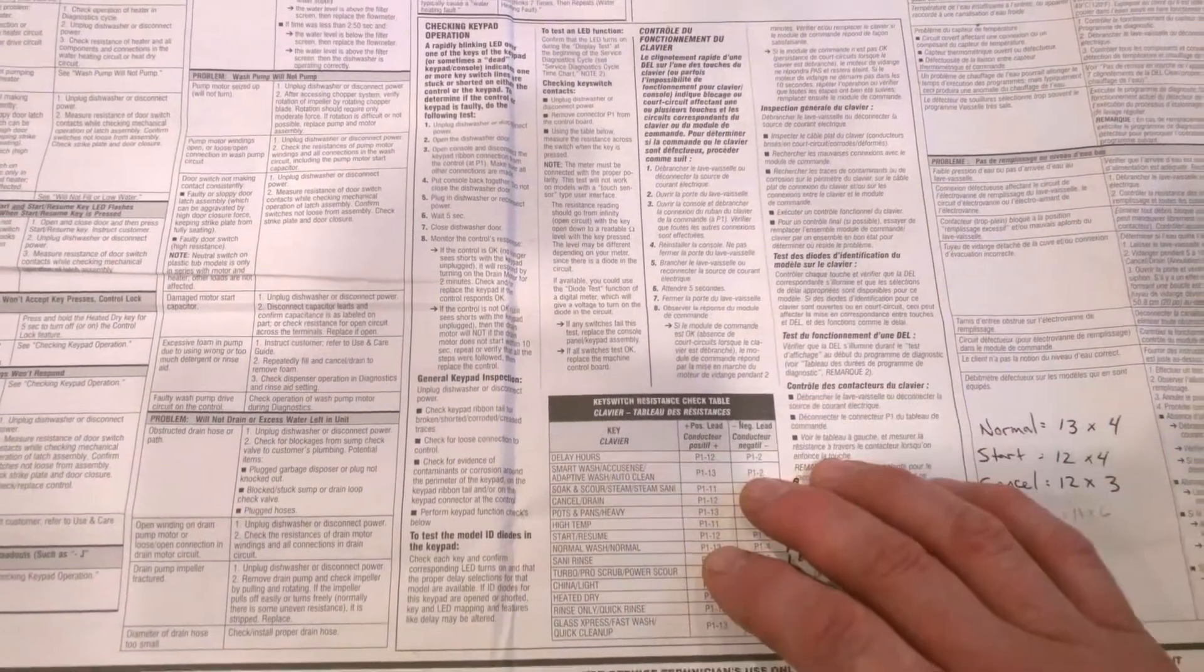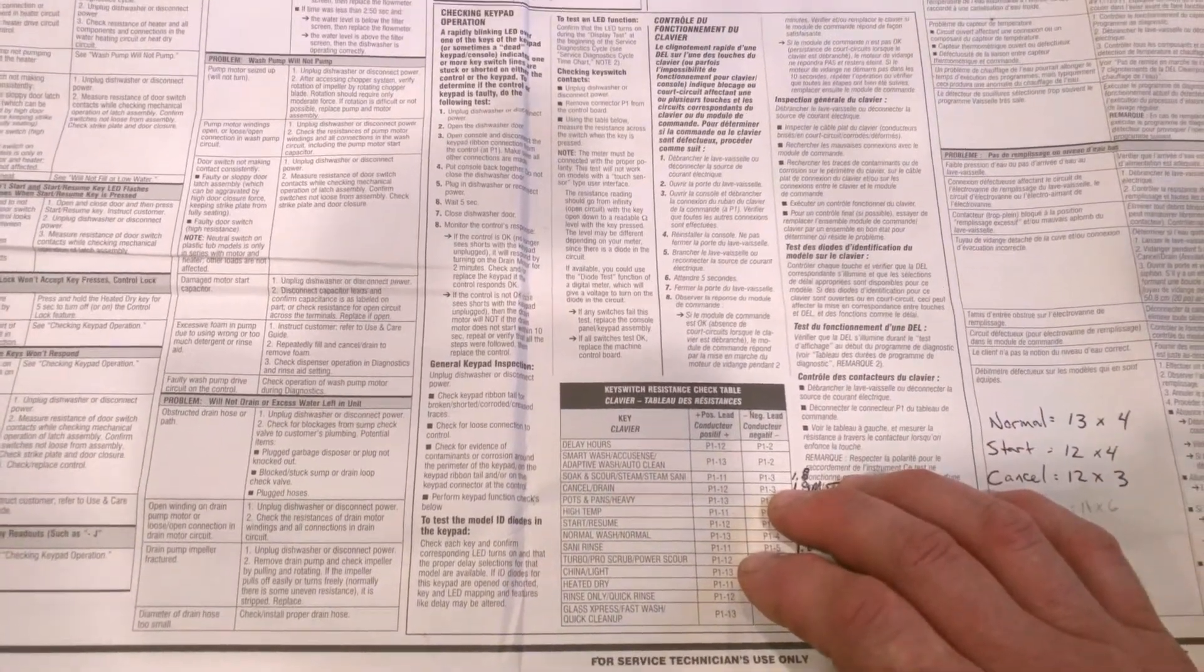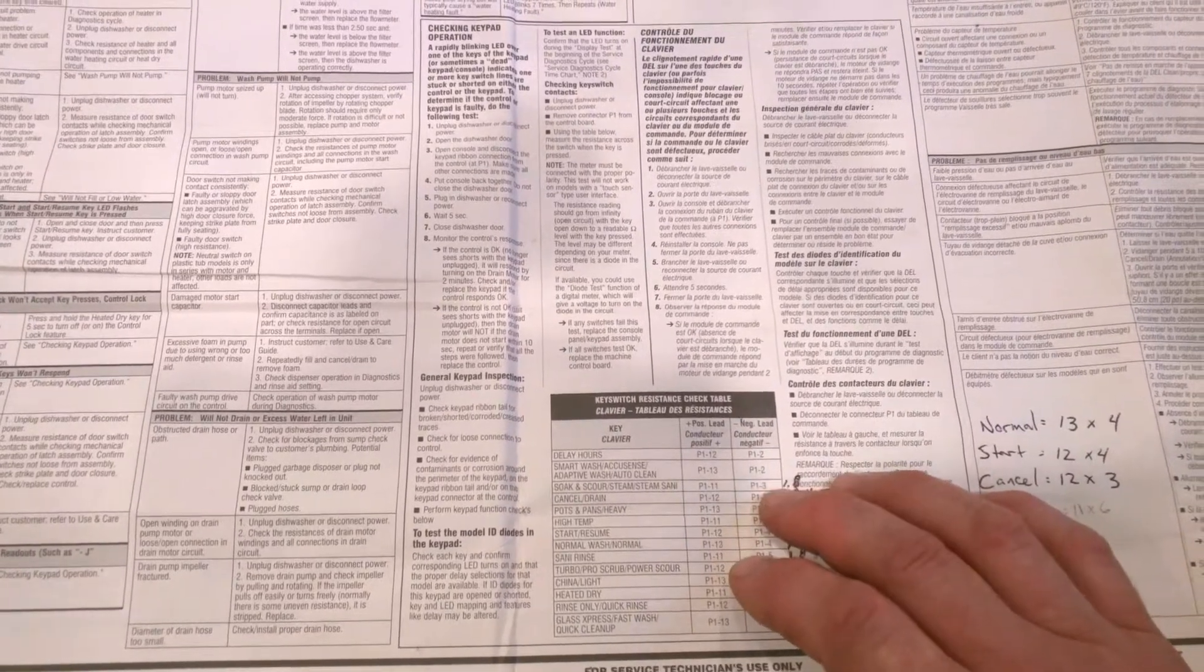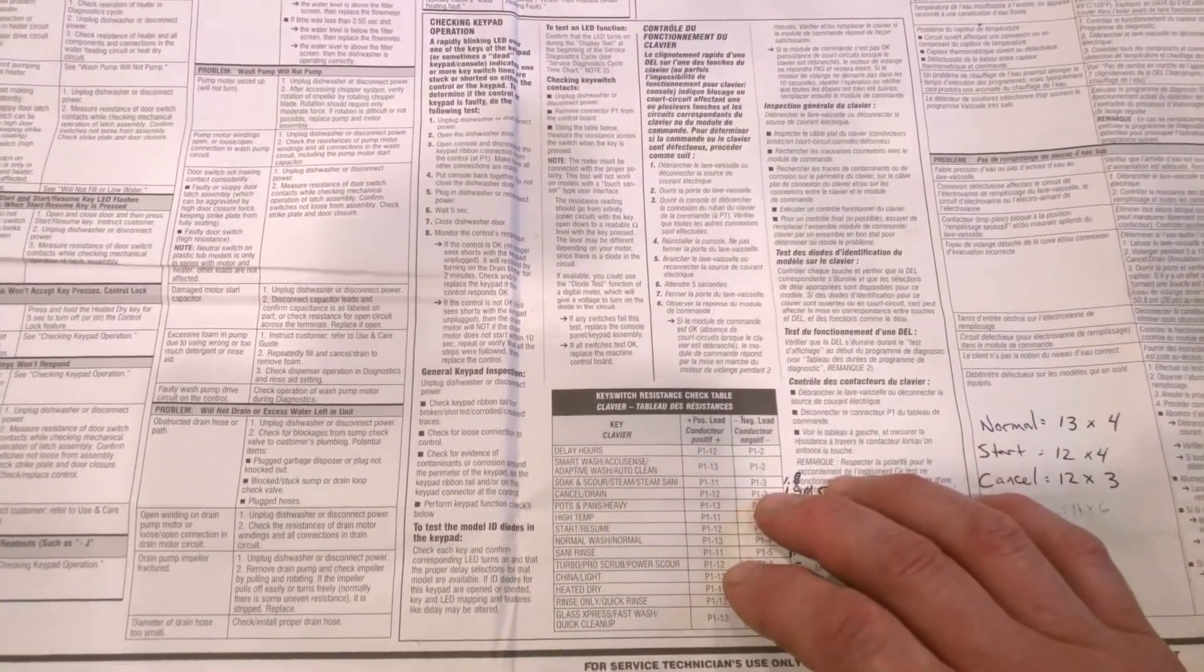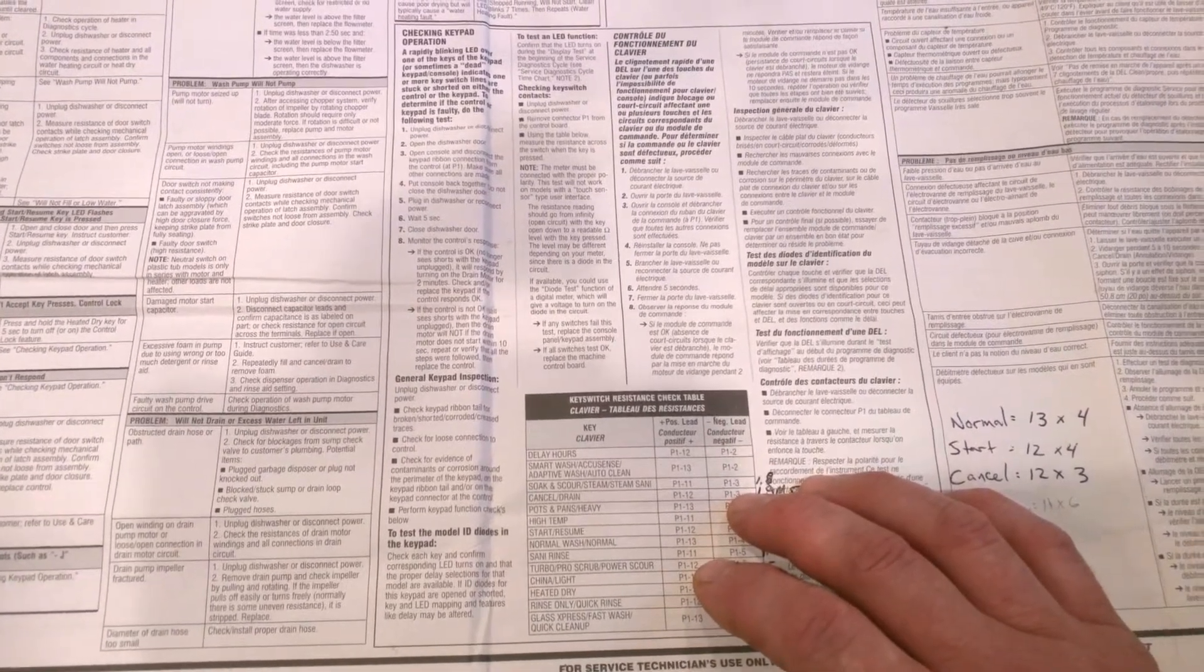After going through the test procedure, which is really simple—you just unplug the keypad, turn it off, unplug the keypad, turn it back on—if it starts the drain cycle, your control panel is good and your keypad is bad.